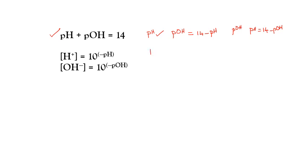If you have the pH value and need to find the hydrogen ion concentration, use the formula: [H⁺] = 10 to the power of negative pH. Similarly, if pOH is given and you need the hydroxide ion concentration, use: [OH⁻] = 10 to the power of negative pOH.